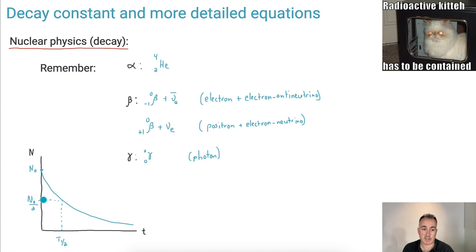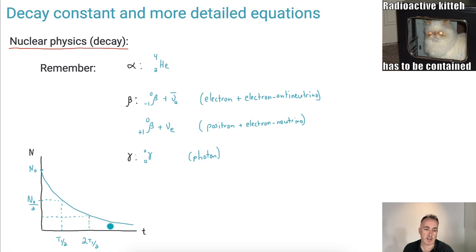It should hold true consistently: if I go to half again, this distance on the graph should be exactly the same as the first half-life. So it should be two times t one-half, then three half-lives, going down by half, half, and half again, and so on. So it's exponential.